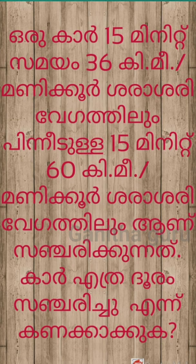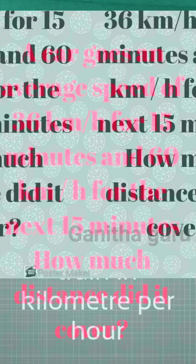A car goes at an average speed of 36 km per hour for 15 minutes, and 60 km per hour for the next 15 minutes. How much total distance did it travel?